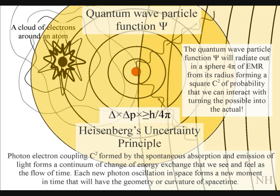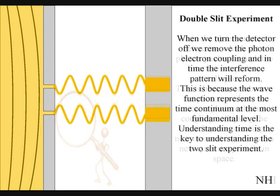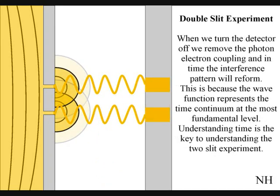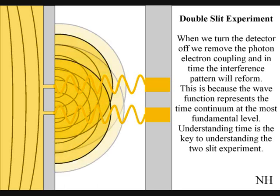This is because the photon-electron coupling represents a new moment in time, the moment of now, within the reference frame of the experiment. If the observer turns off the electronic detector, the interference pattern will reform over a period of time, photon by photon.